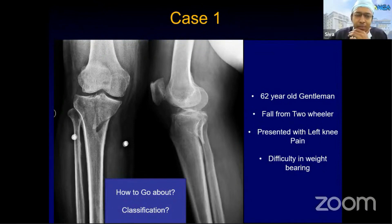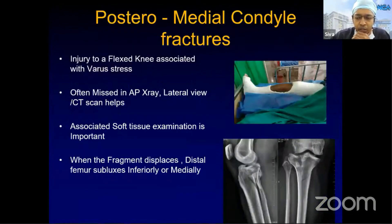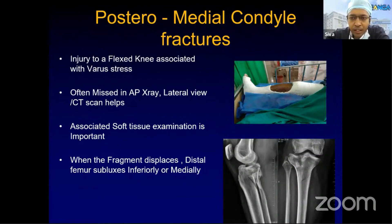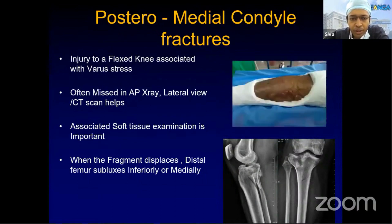Although many classifications have been in vogue, none directly classify these fractures. The mechanism of injury is a flexed knee associated with varus stress, and seeing only an AP X-ray can lead to a wrong diagnosis. A lateral view or CT scan helps in diagnosing these fractures, and soft tissue examination is always important as a medial condyle fracture is considered a high-velocity injury.